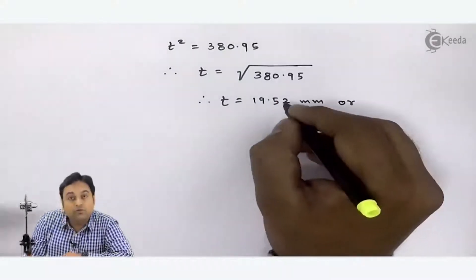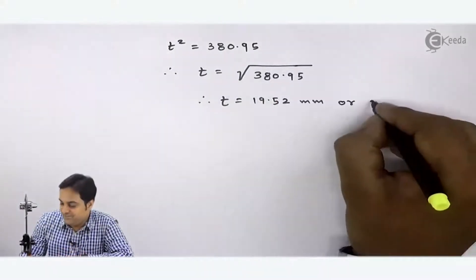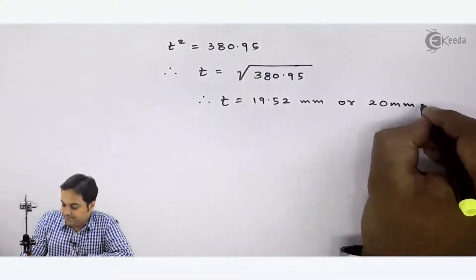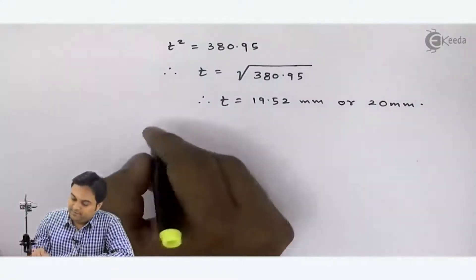Hence, my answer of small T—that will be 19.52 mm, or I can say this value we can round off, so that becomes 20 mm.